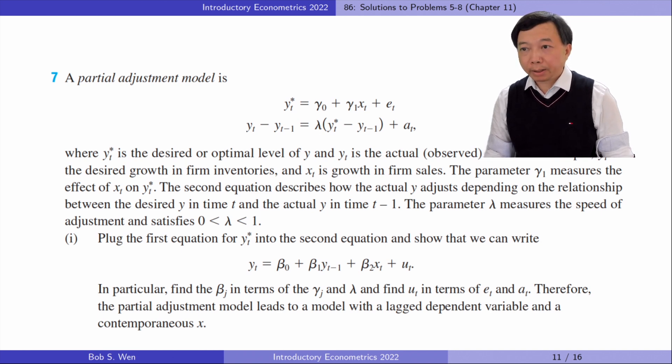The parameter gamma_1 measures the effect of x_t on y_t^*. The second equation describes how the actual y adjusts depending on the relationship between the desired y in time t and actual y in time t-1. The parameter lambda measures the speed of adjustment and satisfies 0 < lambda < 1.